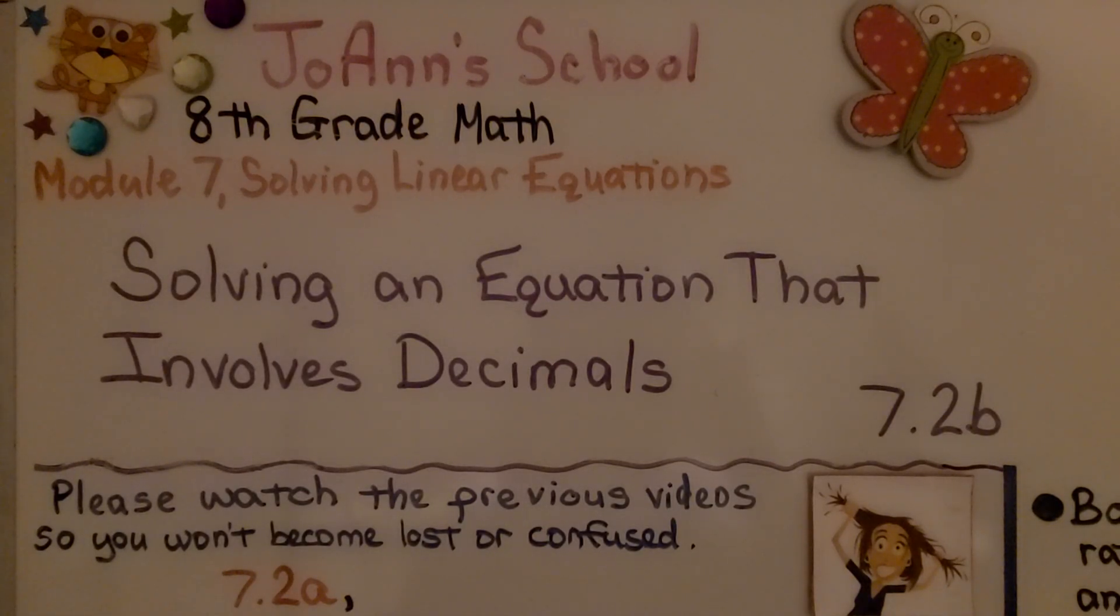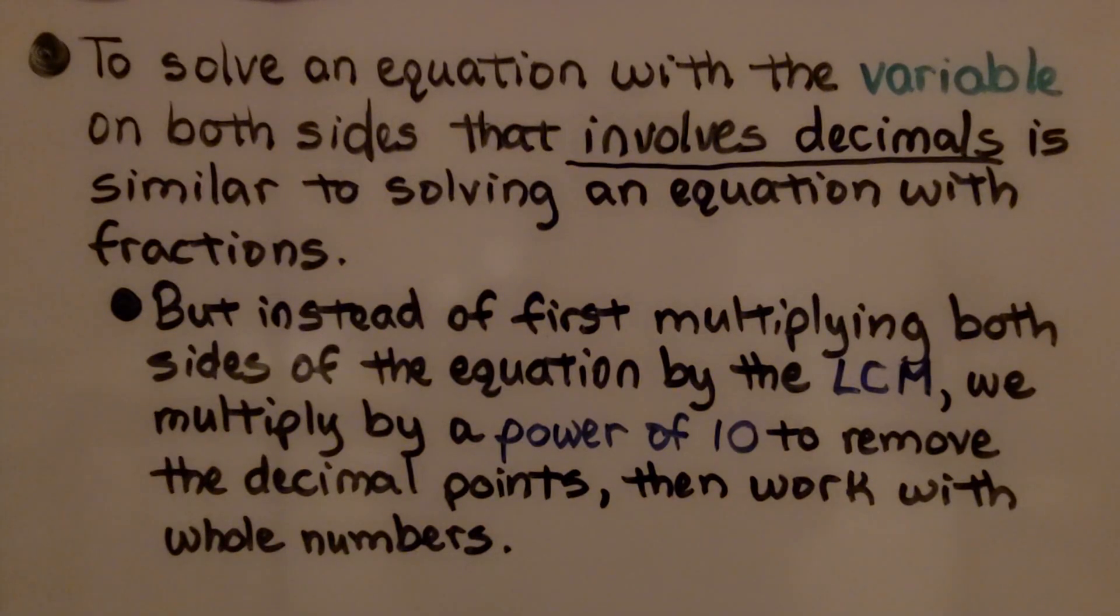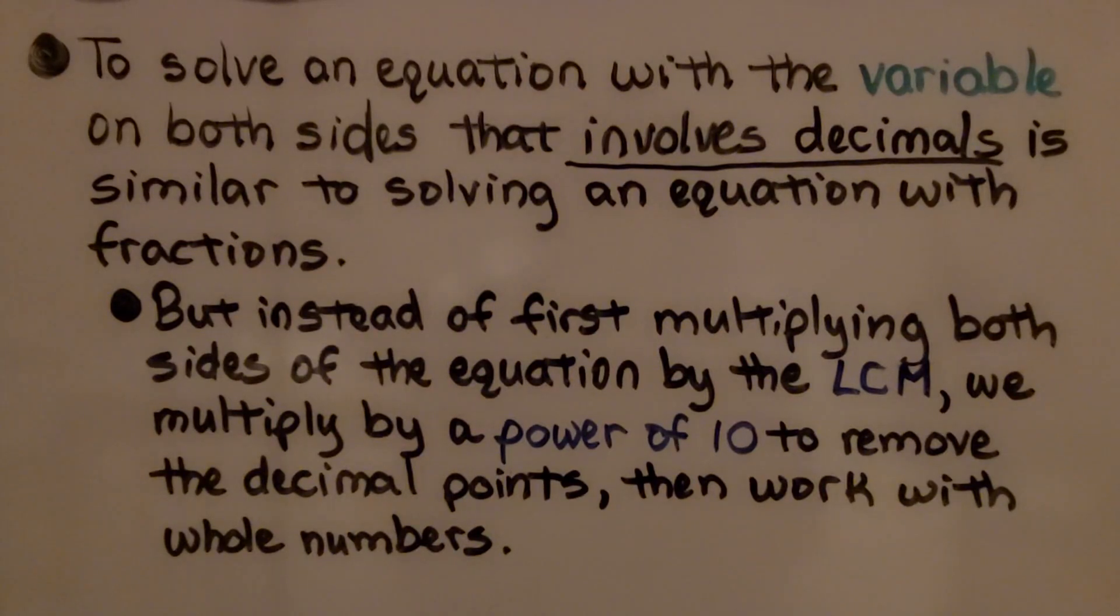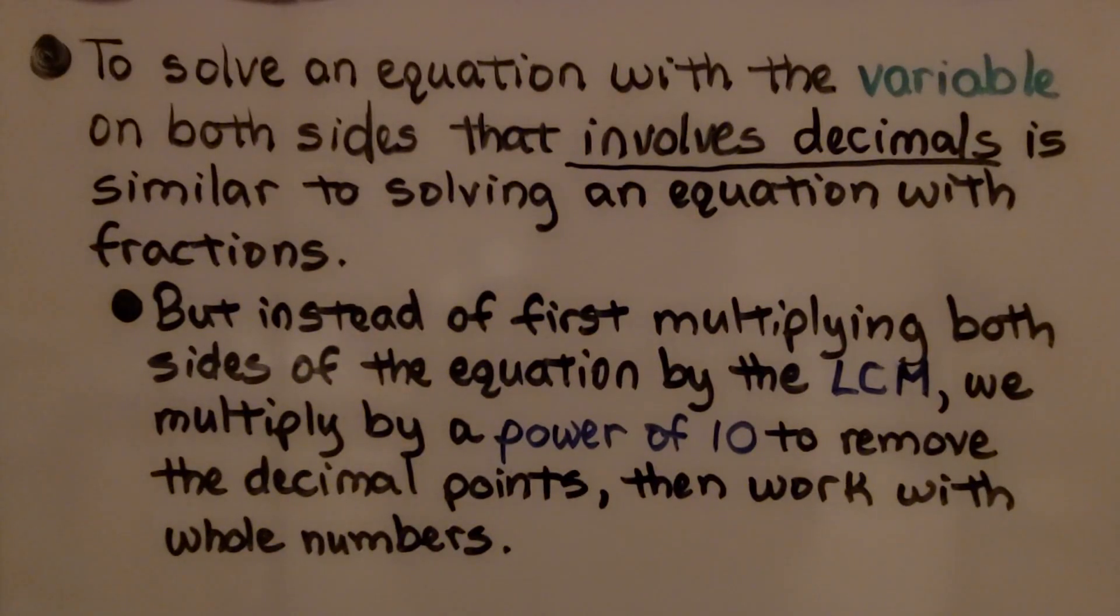Solving an equation that involves decimals. To solve an equation with the variable on both sides that involves decimals is similar to solving an equation with fractions. But instead of first multiplying both sides by the least common multiple, we multiply by a power of 10 to remove the decimal points, then work with whole numbers.